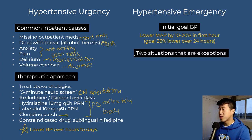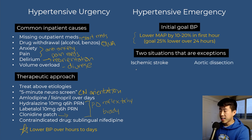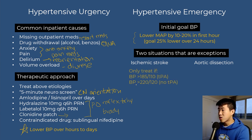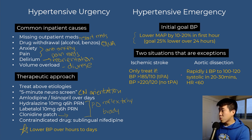There are two important exceptions where you would not follow the standard blood pressure goal: ischemic stroke and aortic dissection. For ischemic stroke, we allow permissive hypertension to improve brain perfusion. If the patient received tPA, allow blood pressure up to 185/110 and only treat above that. Without tPA, allow up to 220/120. For aortic dissection, the opposite applies — you want to rapidly lower systolic BP to 100–120 within 20 to 30 minutes and achieve a heart rate of less than 60.